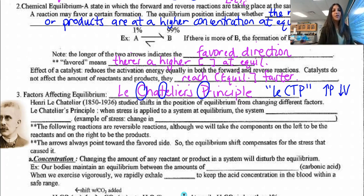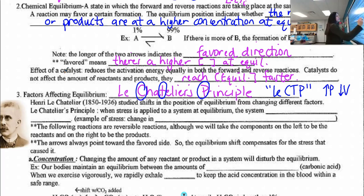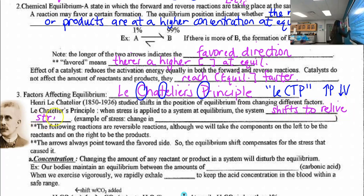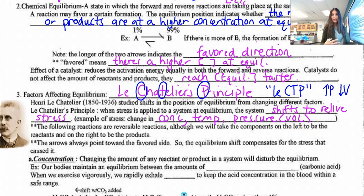Just like our bodies naturally want to relieve stress — if you're doing something very physical, you want to do something opposite, like listening to music. If somebody pushes down on your shoulders, you want to do whatever relieves that stress. Those stresses are: changing the concentration, changing the temperature, changing the pressure or volume. And remember, pressure and volume are inversely related.